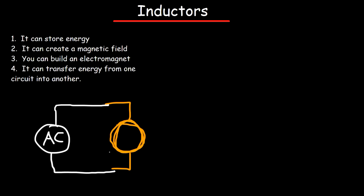AC stands for alternating current. DC is direct current. If you use DC current, this is not going to work very well. You need to use current that's constantly changing. AC current is constantly reversing in direction.